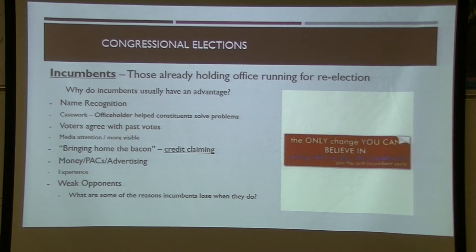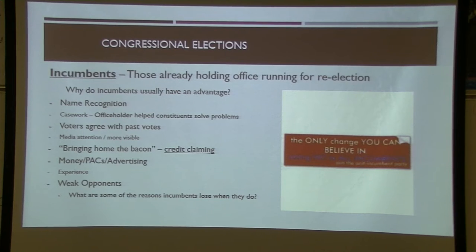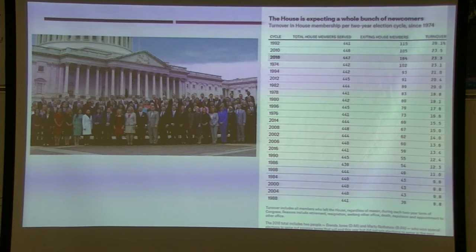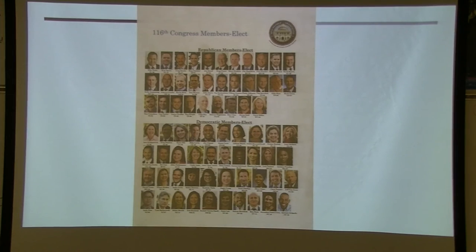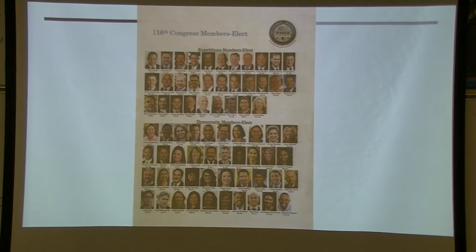What are the reasons incumbents lose when they do? It's usually a scandal. Other reasons include a midterm or off-year wave, or coattail effects. Looking at the data — the newcomers for 2020 weren't even completely counted yet — you'll notice the biggest changes usually happen in midterm or off-year elections. In 2018 there was a large number of new Democratic women, but 2020 was different: a large percentage of Republican newcomers were women, dramatically changing the composition of the House between 2018 and 2020.